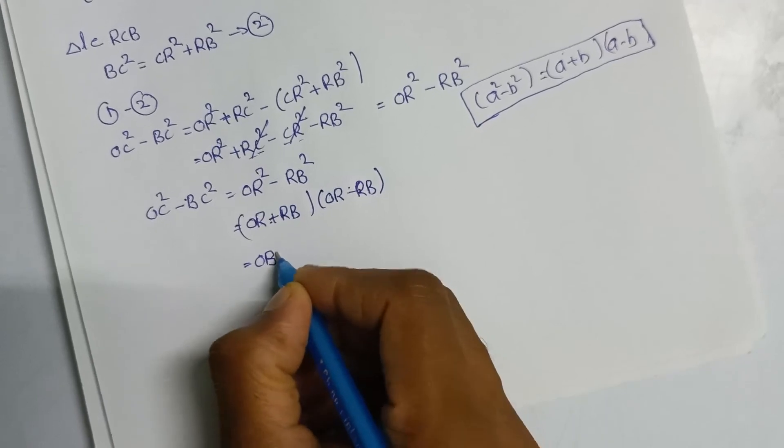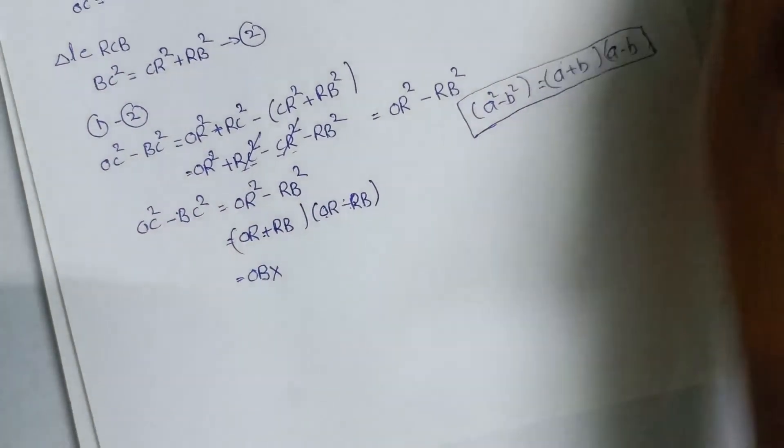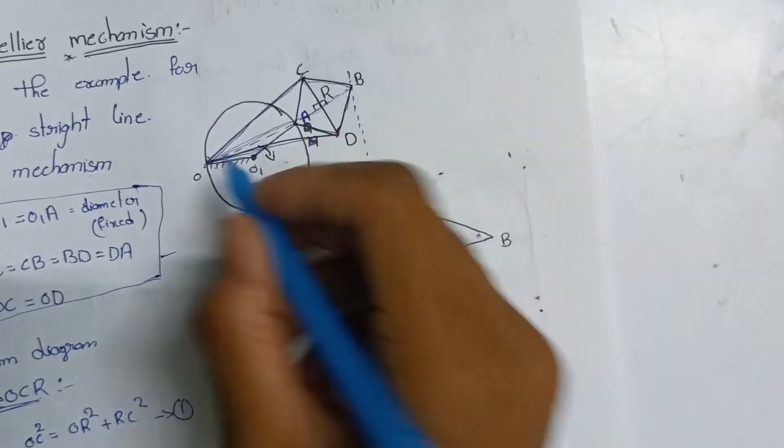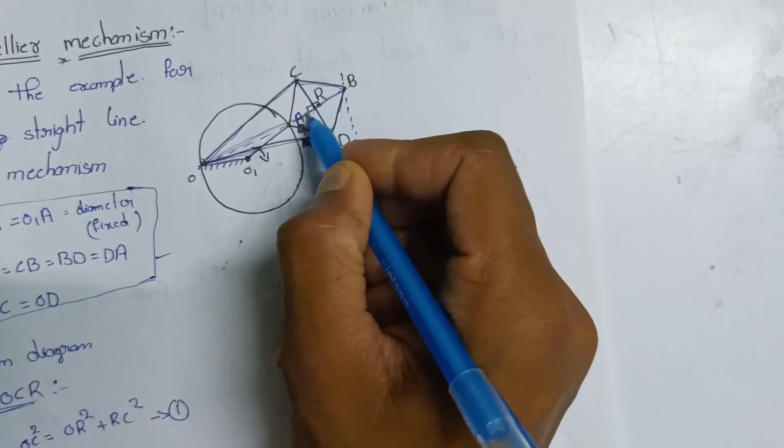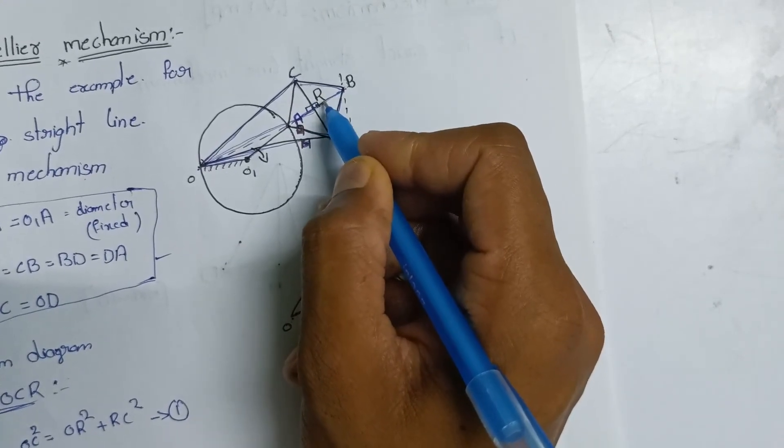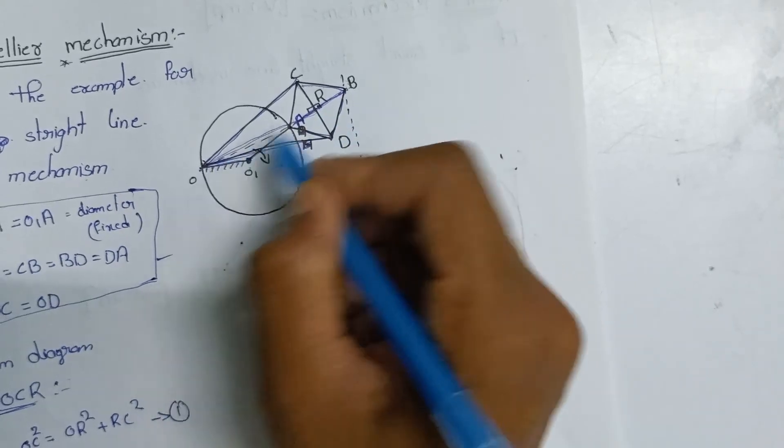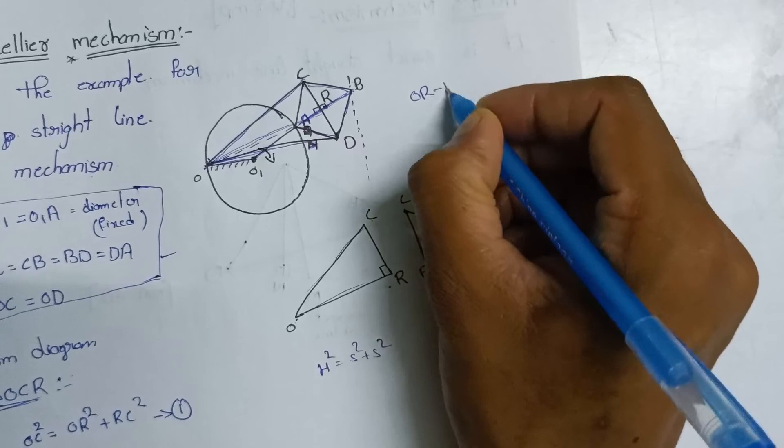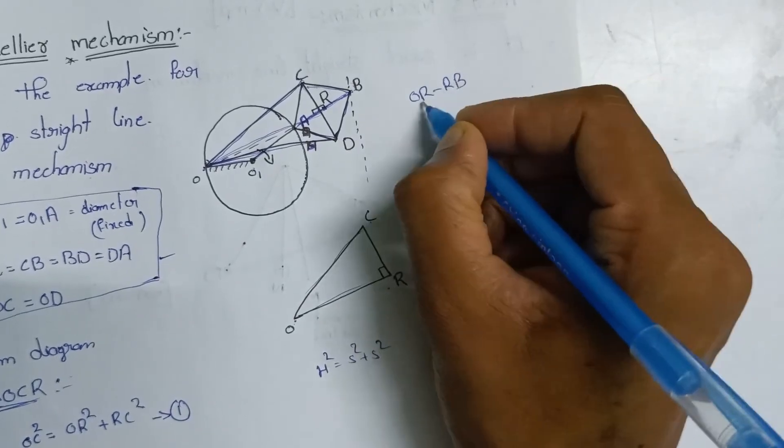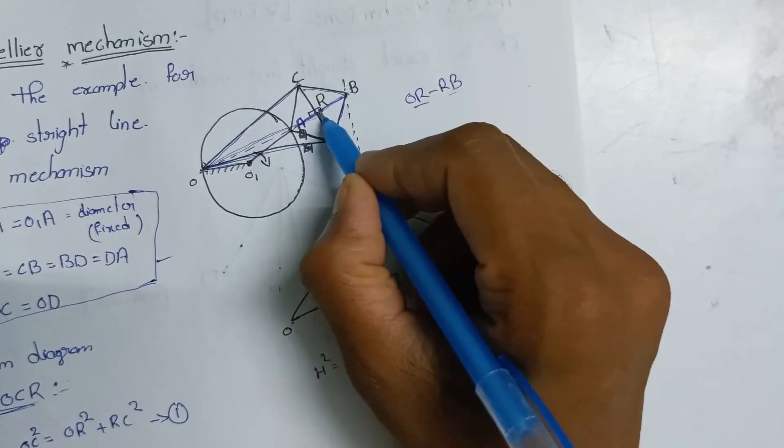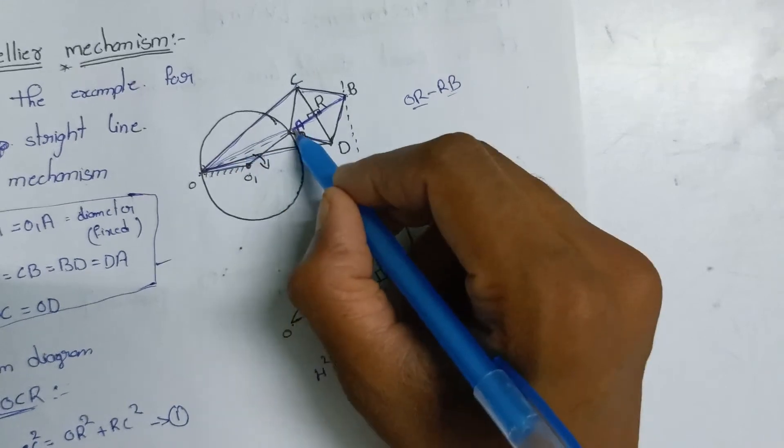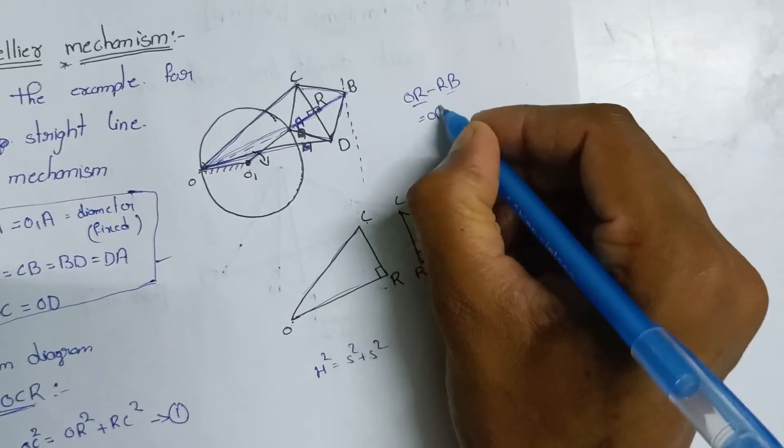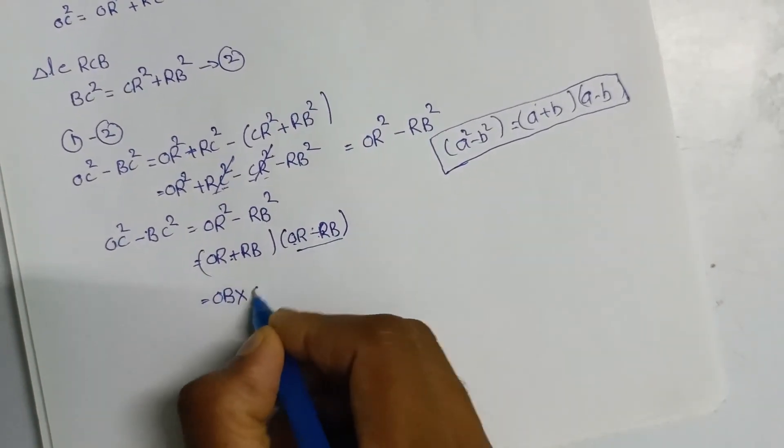OB into OR minus RB. OR minus RB - in the diagram, OR minus RB is the length. OR minus RB in place can be replaced as OA.